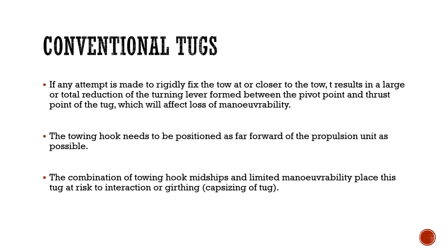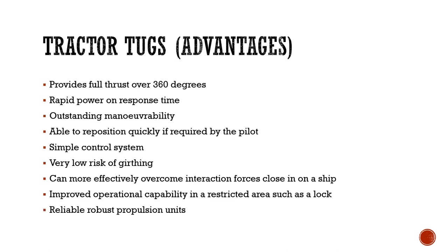The towing hook needs to be positioned as far forward of the propulsion unit as possible. The combination of towing hook amidships and limited maneuverability places this tug at risk of interaction or girting. Girting basically refers to the capsizing of a tug when, instead of the tug pulling the ship, the ship starts to pull the tug — especially if there is a miscommunication between the tug master and the ship's master.